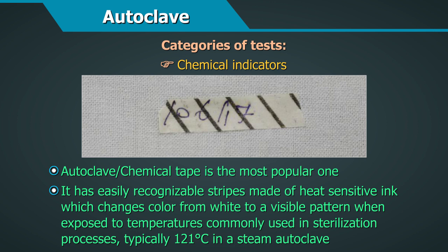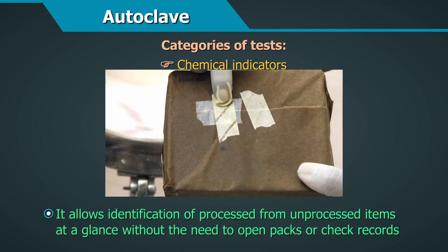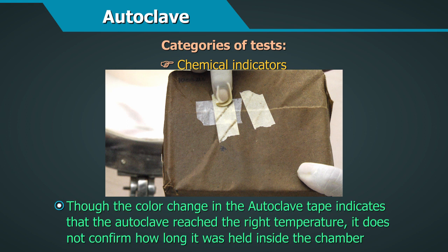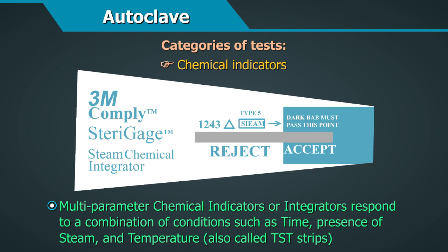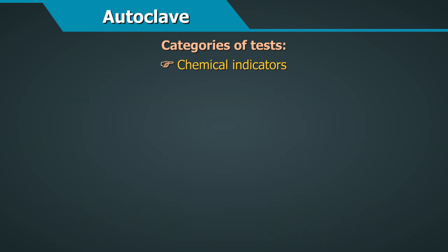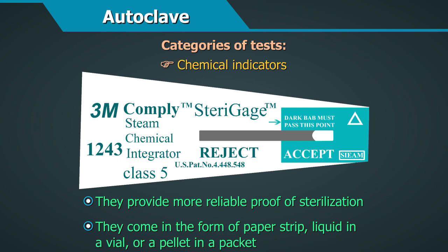Autoclave chemical tape is the most popular indicator. It has recognisable stripes of heat-sensitive ink which change colour from white to a visible pattern when exposed to temperatures typically used in sterilization, such as 121°C in a steam autoclave. It allows identification of processed from unprocessed items at a glance without opening packs. However, the colour change only indicates the autoclave reached the right temperature — it does not confirm how long the item was held inside. Multi-parameter chemical indicators, or integrators, also called TST strips, respond to a combination of time, presence of steam, and temperature, providing more reliable proof of sterilization, and come as a paper strip, liquid in a vial, or pellet in a packet.